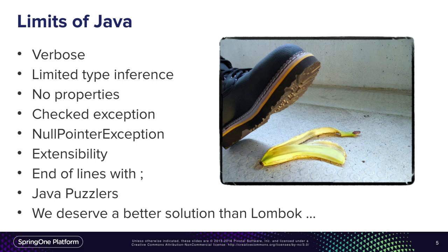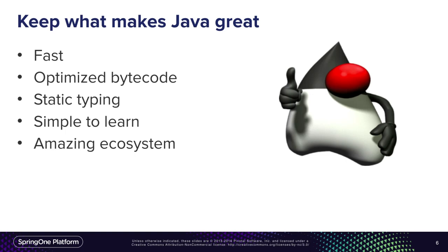The extensibility is quite limited if we compare Java to a language like Groovy, where we have a powerful extension model. Semicolons at the end of lines — just a detail, but that could matter. Java is quite simple, but there are also multiple Java puzzles and traps that come from its long history. And I really think we deserve a better solution than Lombok — some annotations and helpers to write shorter Java code — that's nice, but that's still a trick.